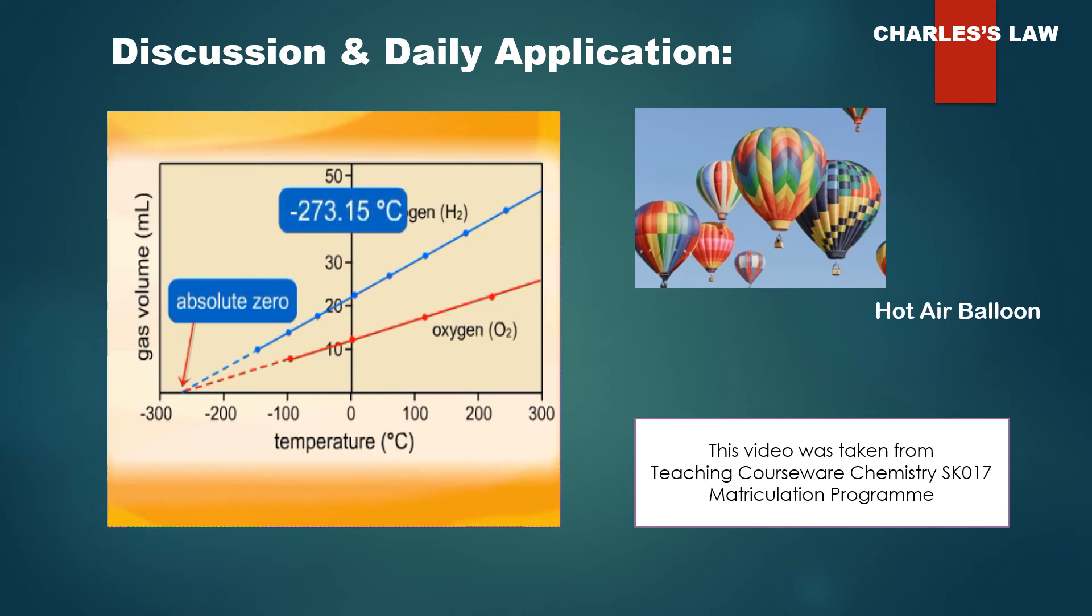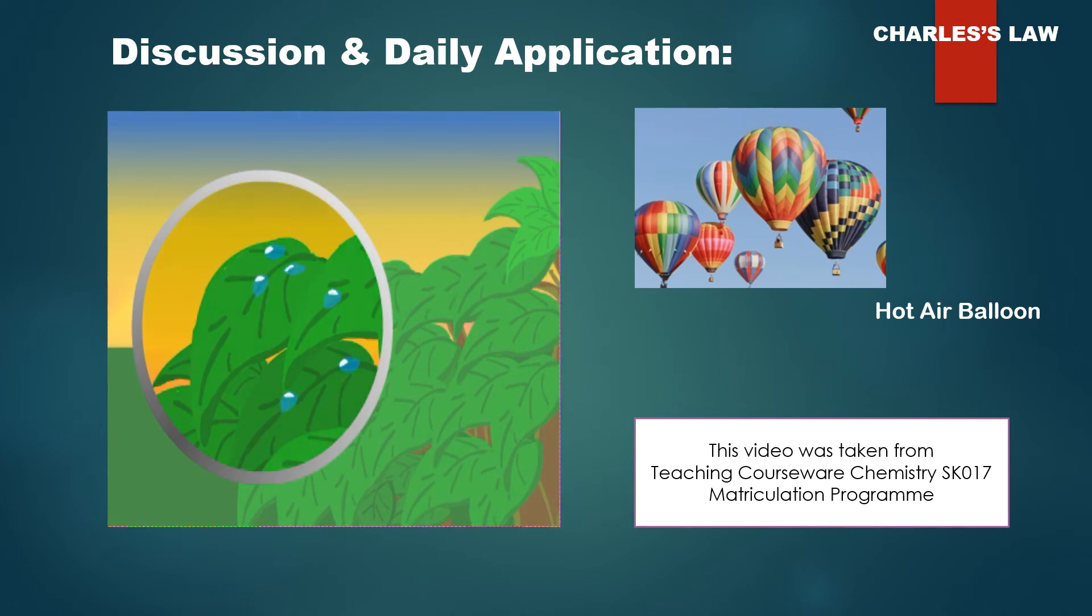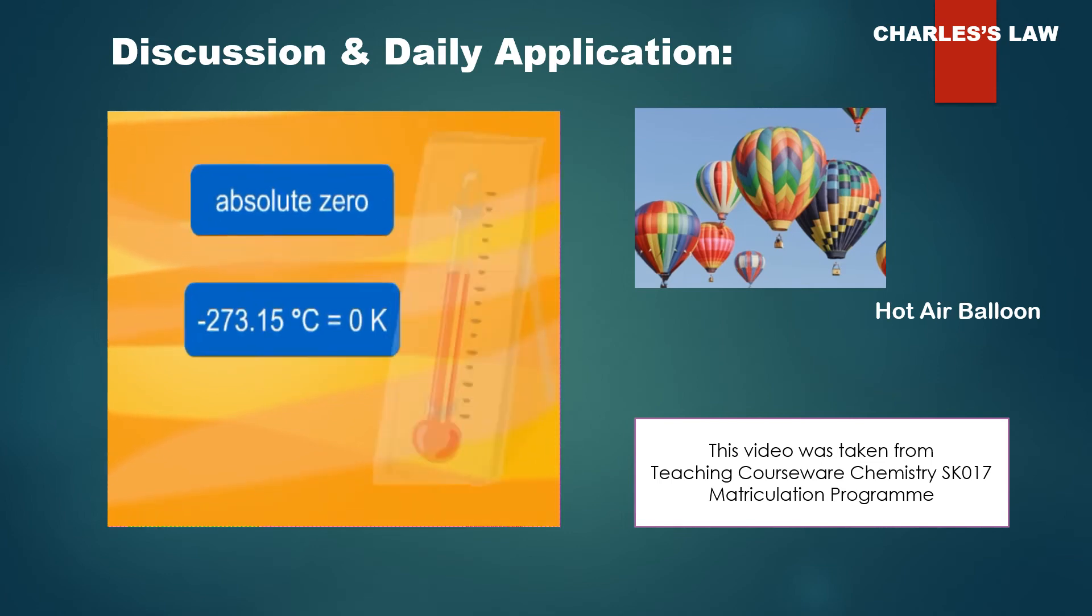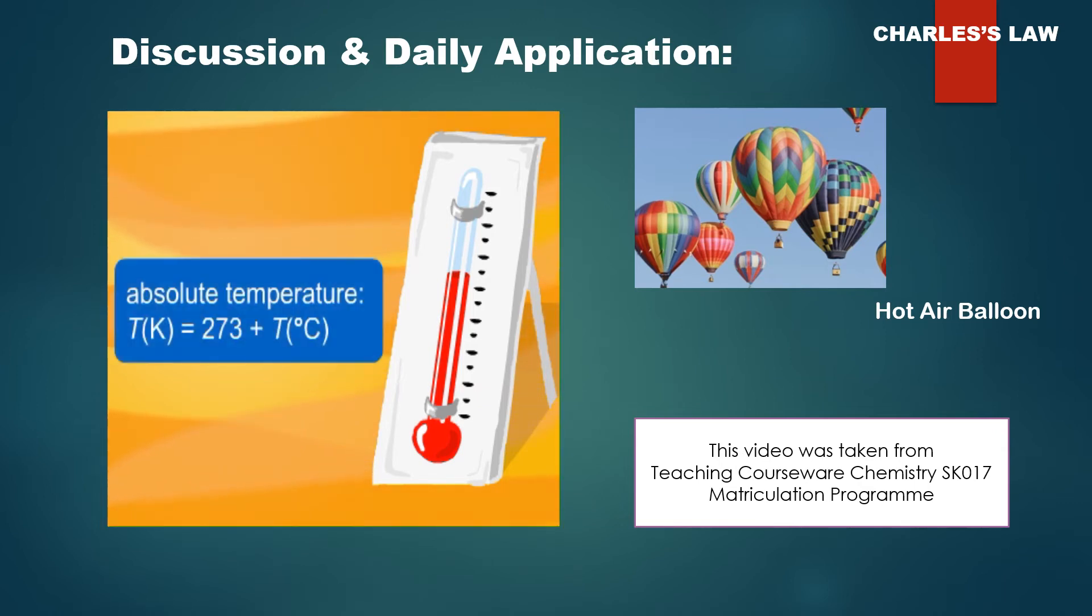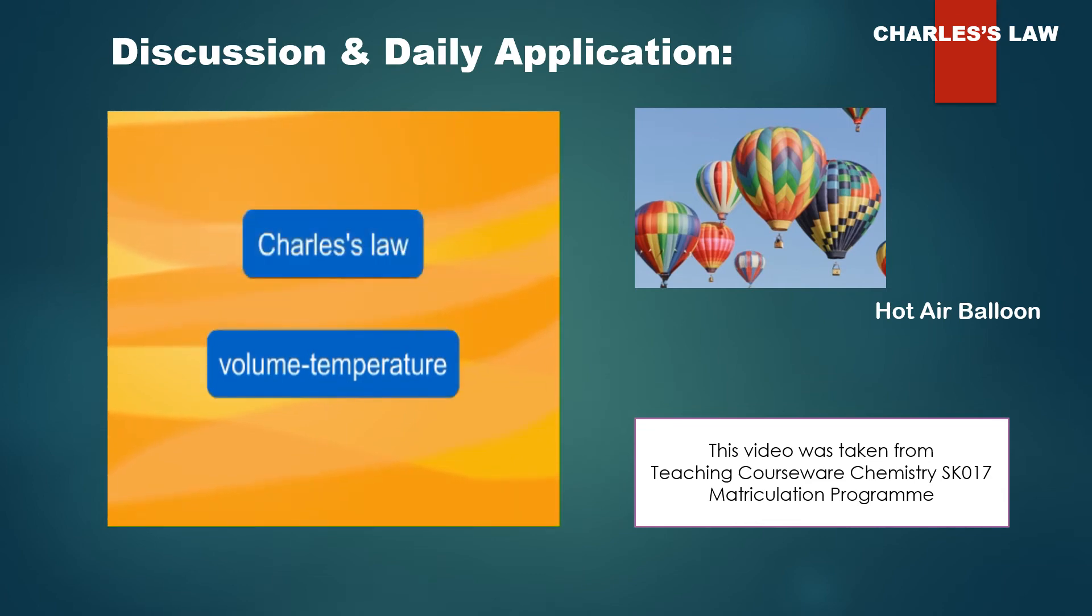And a temperature of minus 273.15 degrees Celsius. Of course, gases do not ever reach zero volume upon cooling, since they change to liquids and then to solids before reaching that temperature. The temperature minus 273.15 degrees Celsius is called absolute zero and is the basis of the absolute temperature scale, where the temperature is measured in Kelvin. We have already shown how to convert degrees Celsius to Kelvin.